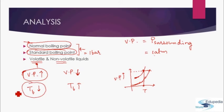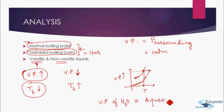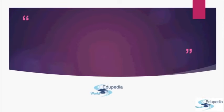Lastly, vapor pressure of water has another specific name — it is also known as aqueous tension of water, or simply aqueous tension. Whenever you hear the term aqueous tension, it is nothing but vapor pressure of water. For all other liquids you simply use the term vapor pressure; for water you can use the term aqueous tension. This finishes the topic of vapor pressure. In the next section we will study viscosity and then surface tension, which will wrap up the chapter on states of matter. Thanks for watching Edupedia World videos.